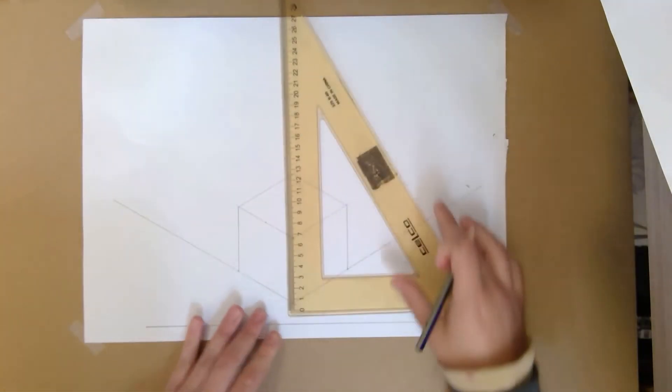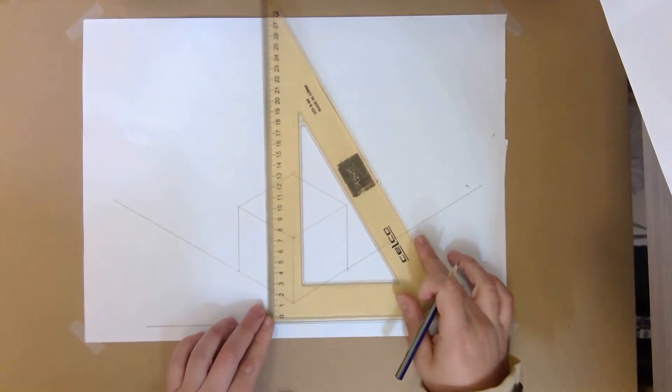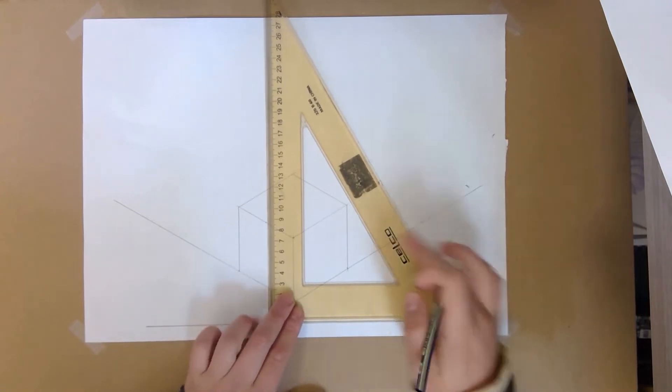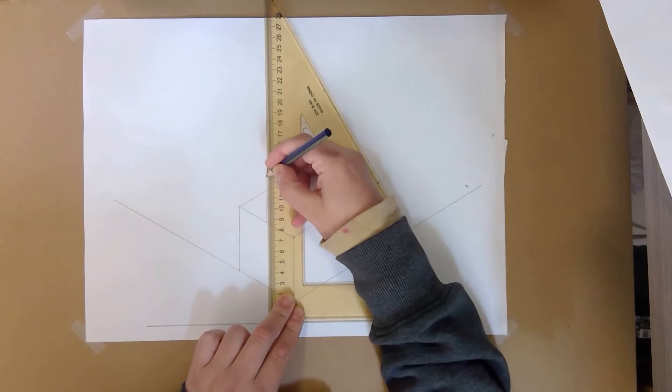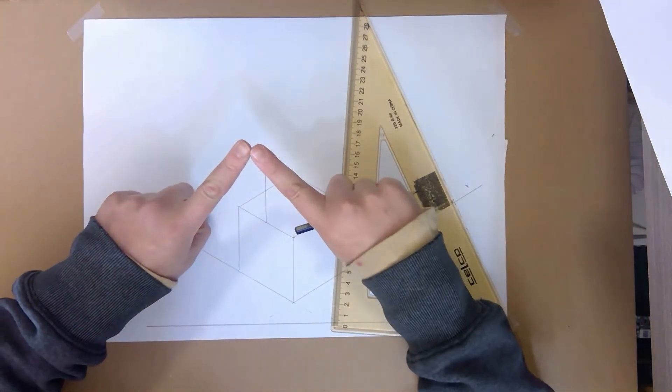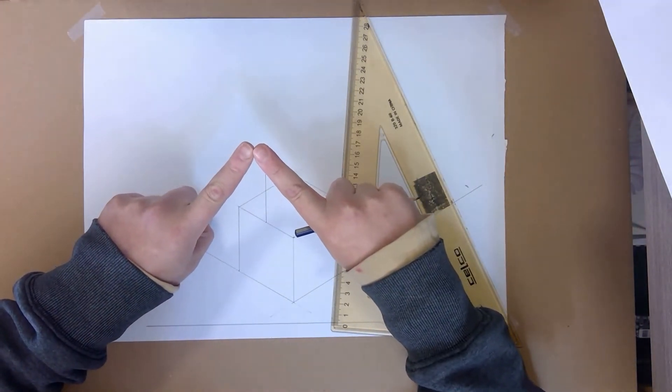I'm then going to line up my set square with my baseline like this towards the bottom of my page. And I'm going to project that line up as high as I want my roof to go. Now, this line indicates the point of our roof, so the highest point.